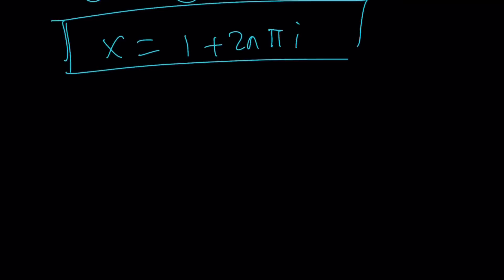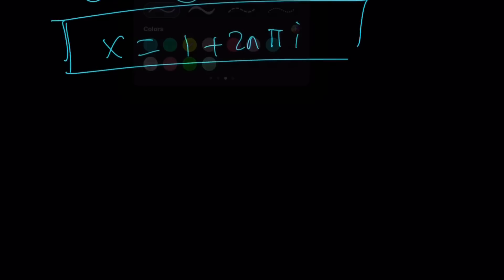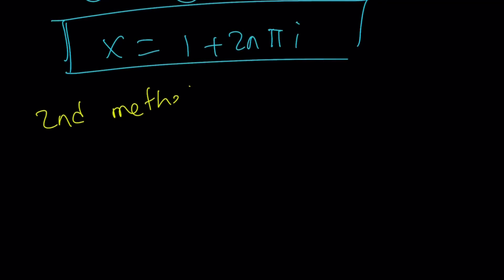And please let me know which one you like better. Second method is the following. We're obviously going to use the same formula, e to the i alpha equals cosine alpha plus i sine alpha. Now remember, we have cosine of i minus i sine i, and as before, we can basically,